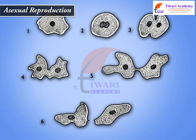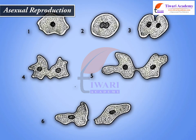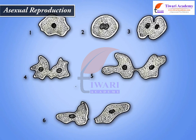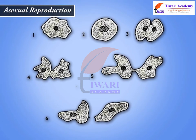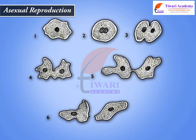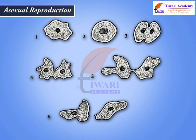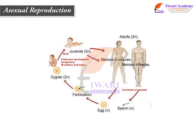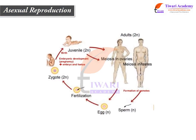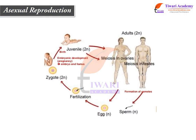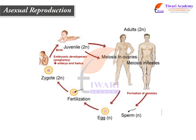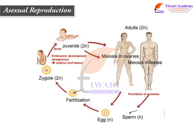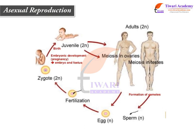In asexual reproduction, neither the sex cells nor gametes are formed, nor do they unite to form the zygote. Moreover, the participation of two organisms, male and female, is not required. Only one organism reproduces.